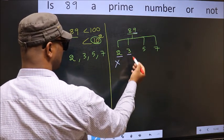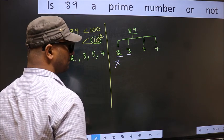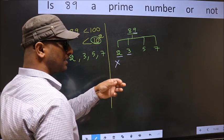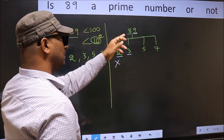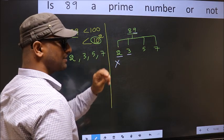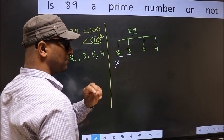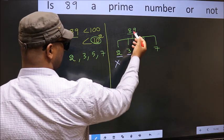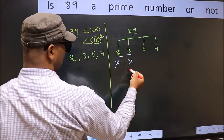Next number 3. To check divisibility by 3, add the digits: 8 plus 9. We get 17 and 17 is not divisible by 3. So this number also not divisible by 3.